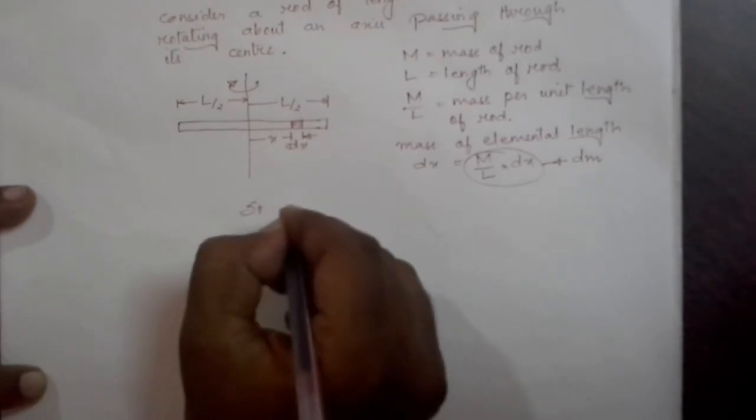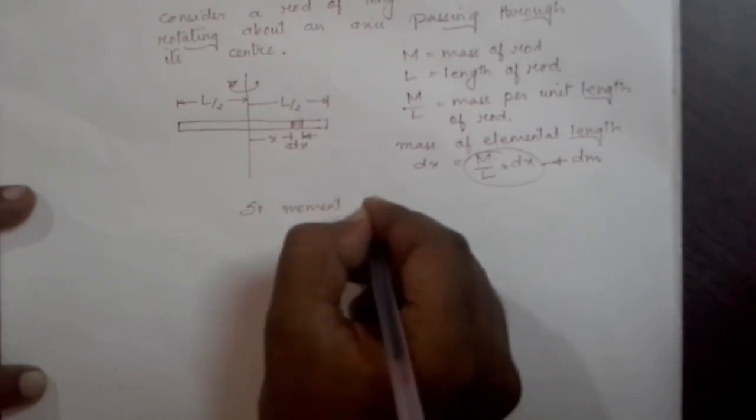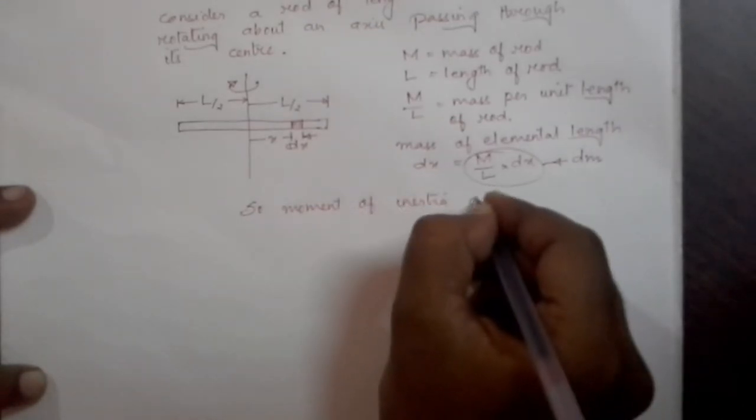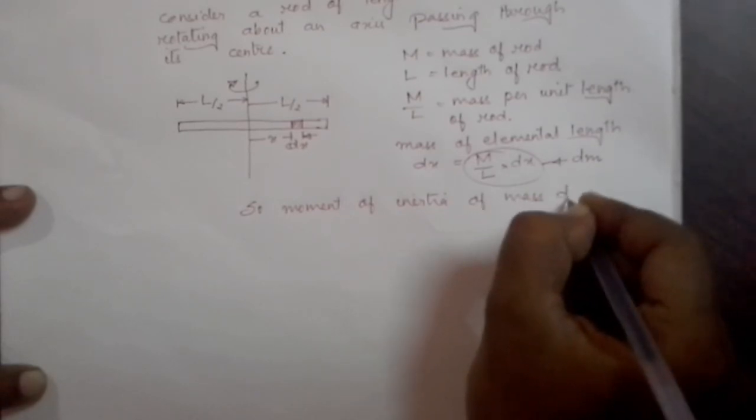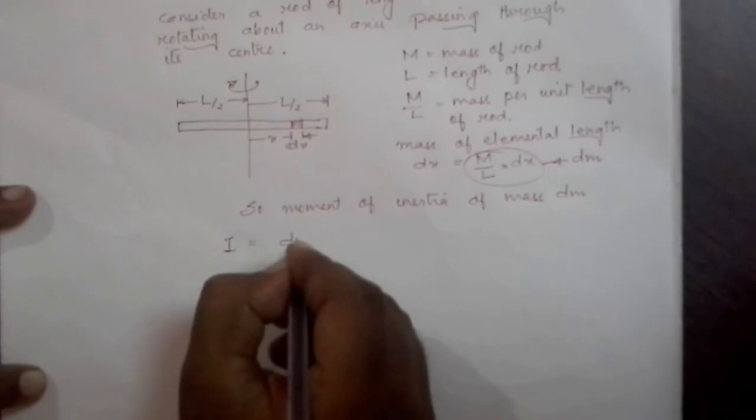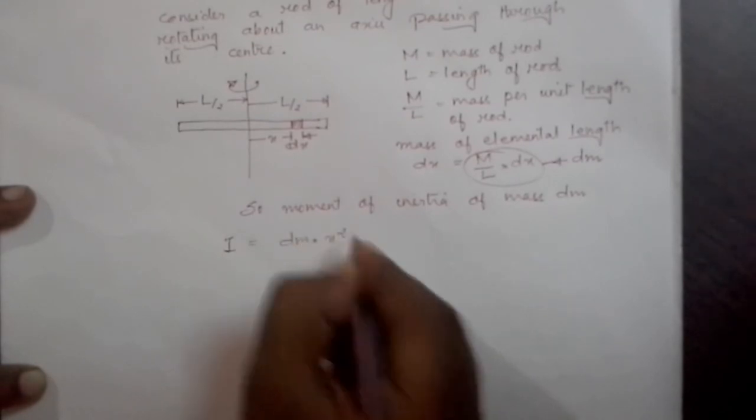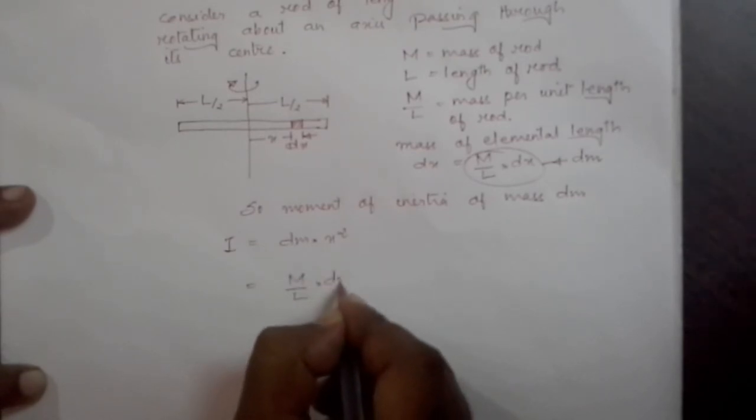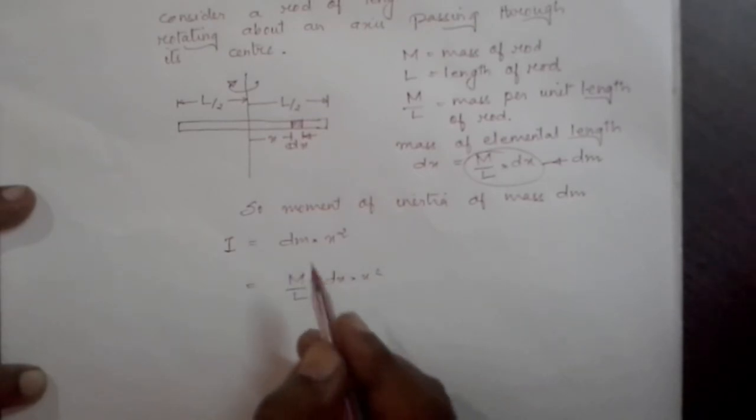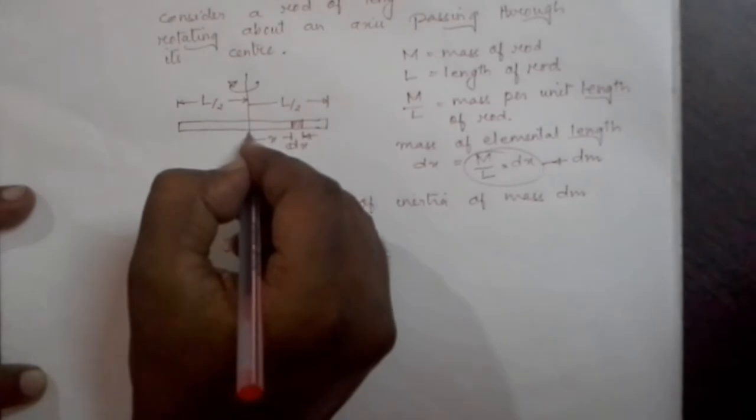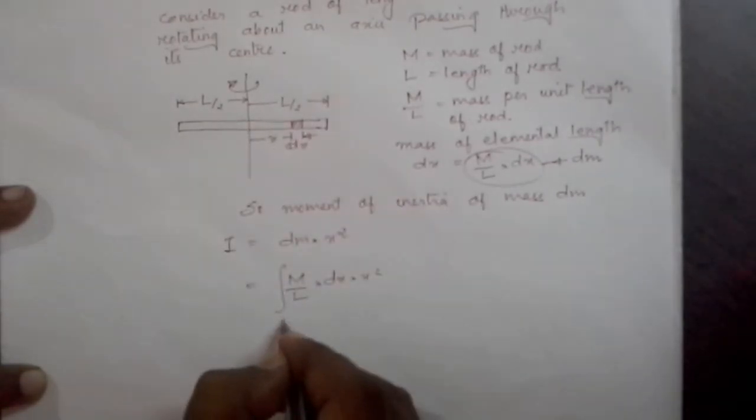So the moment of inertia of mass dm will be equal to I equals dm into x square, or we can write it as M by L into dx into x square. Now we will integrate this whole value over from 0 to L by 2.